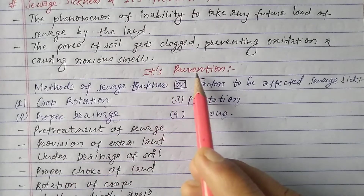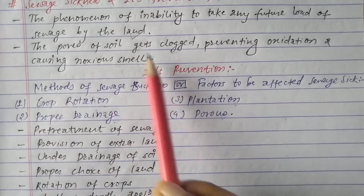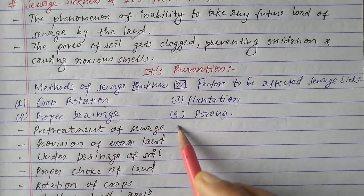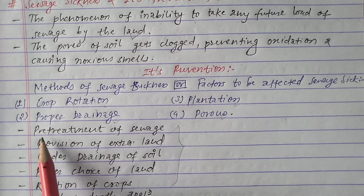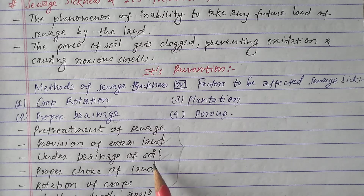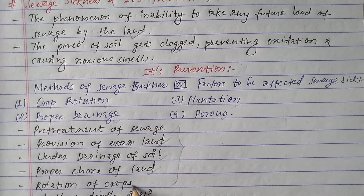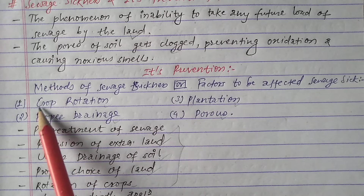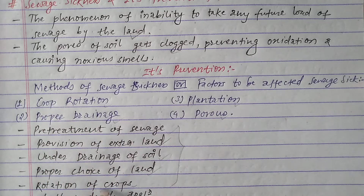The prevention of sewage sickness also includes: pre-treatment of sewage, provision of extra land, under drainage of soil, proper choice of land, rotation of crops, and shallow depth application.